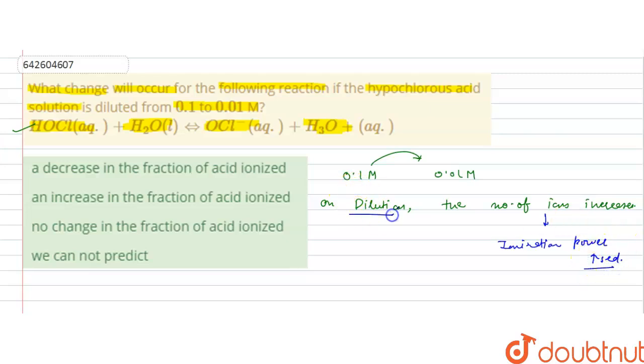Because on dilution the number of ions increases. If the solution is 0.1 molar first and is diluted to 0.01 molar, the number of ions will increase, which increases the ionization power of this HOCl acid.